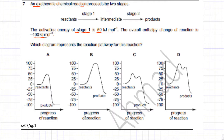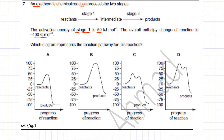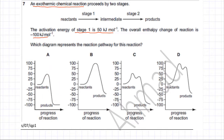The question asks which diagram represents the reaction pathway for this reaction. Since it's a two-step reaction, options A and B can't be correct because they are one-step reactions — reactants getting converted directly to products.